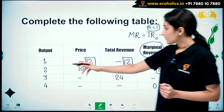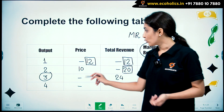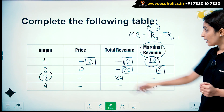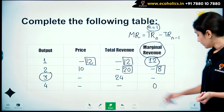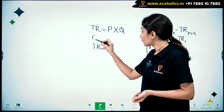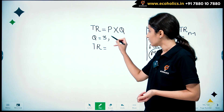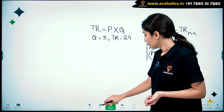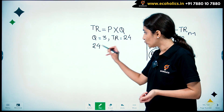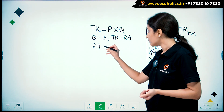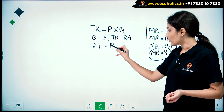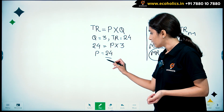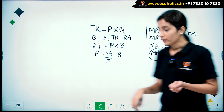In the next case, output is 3, price is not given, and total revenue is 24. Using total revenue = P × Q, we have 24 = P × 3, therefore price = 24 ÷ 3 = 8.